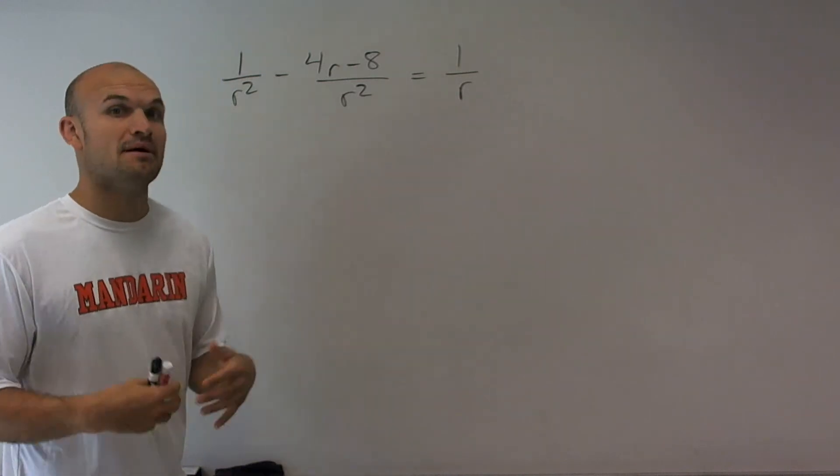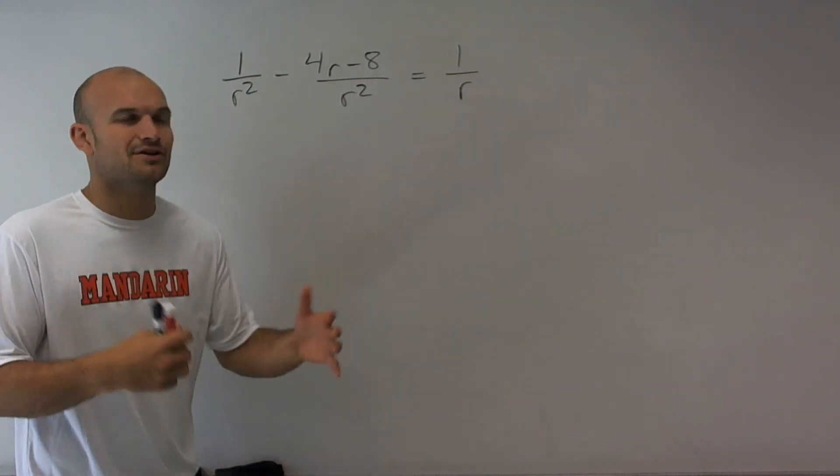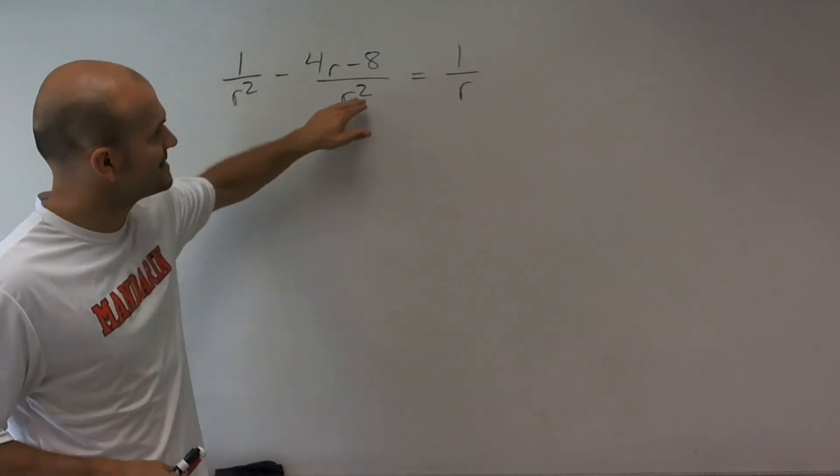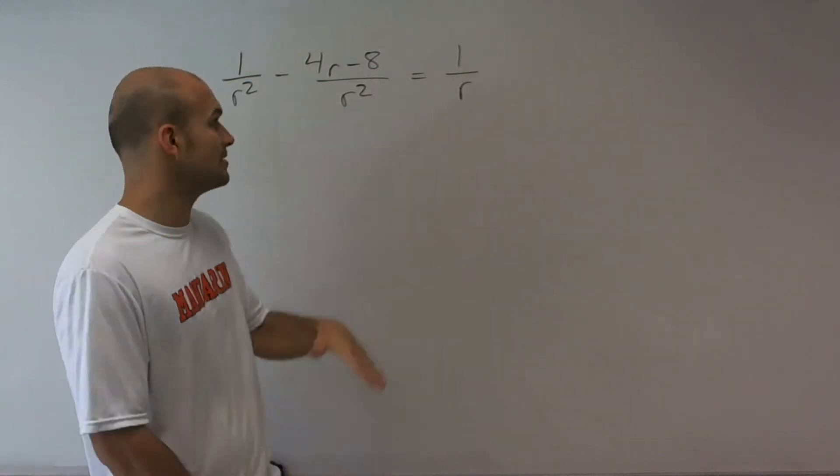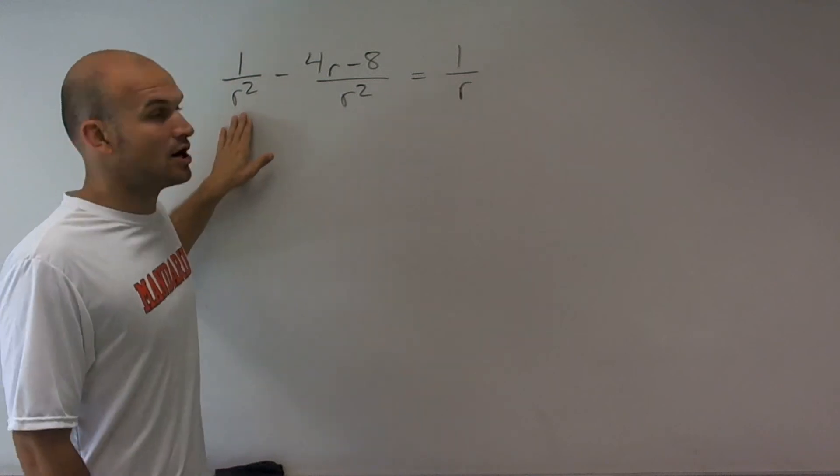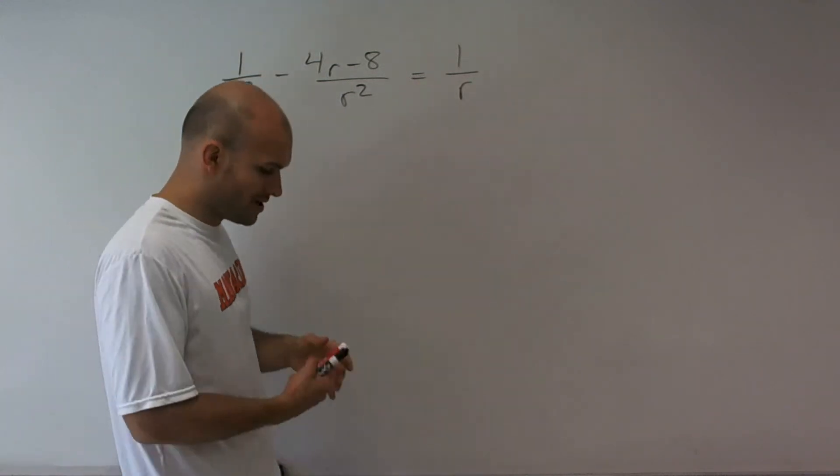Now, your least common denominator is helpful because then you don't have to do as much work. So I look at my denominators and the least common denominator is going to be r squared, because r squared divides into r squared, as well as r divides into r squared.